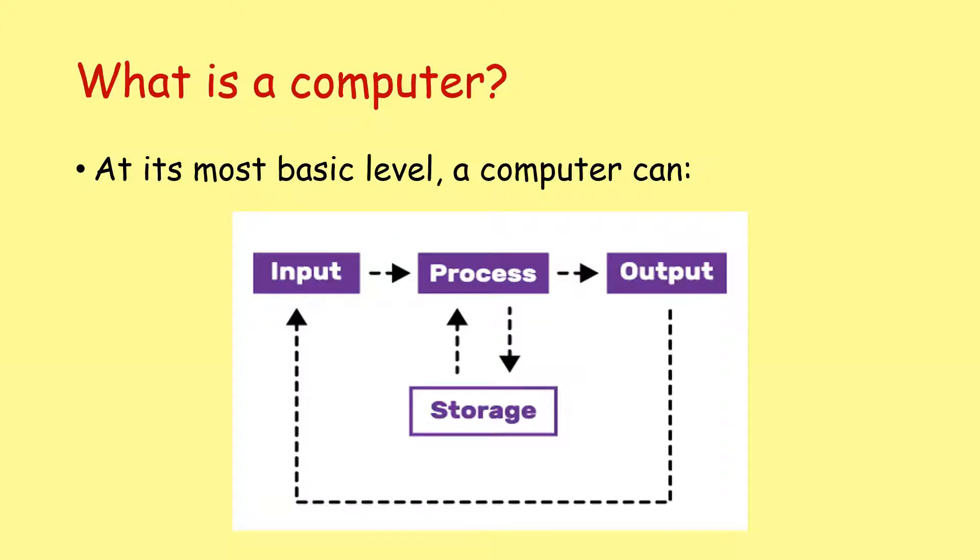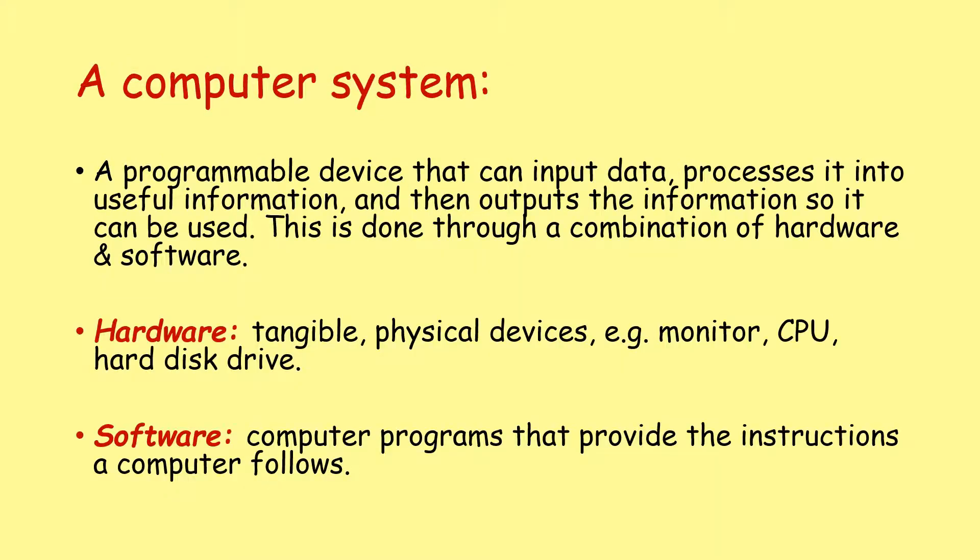So what is a computer? Well if you have a look at this diagram you can see the keywords: you've got input, we've got process, we've got output, and we've also got storage. So a computer system is a programmable device that can input data, process it into useful information, and then output the information so that it can be used in some way.